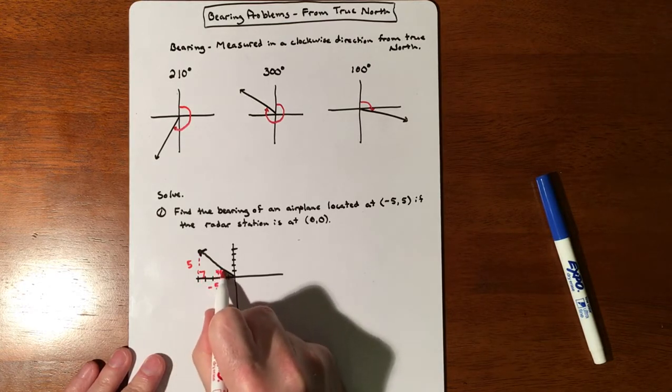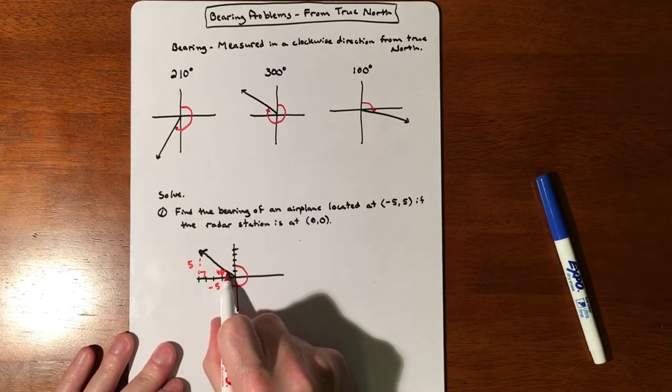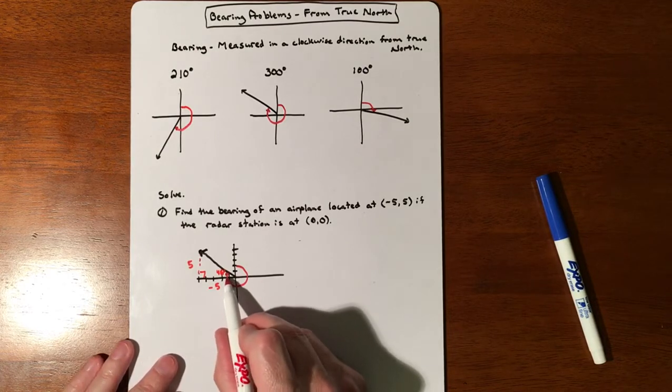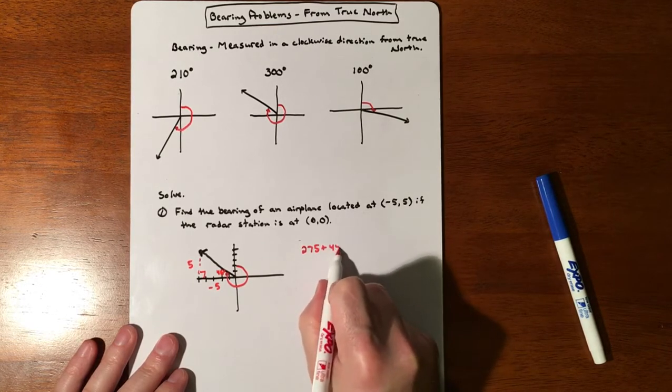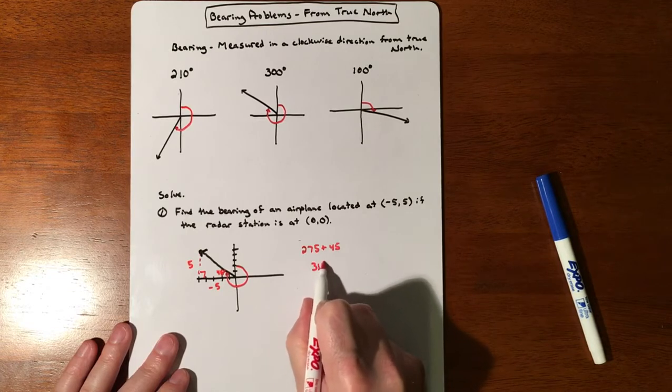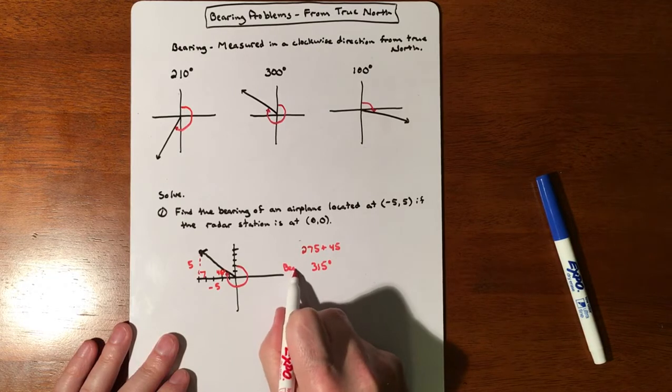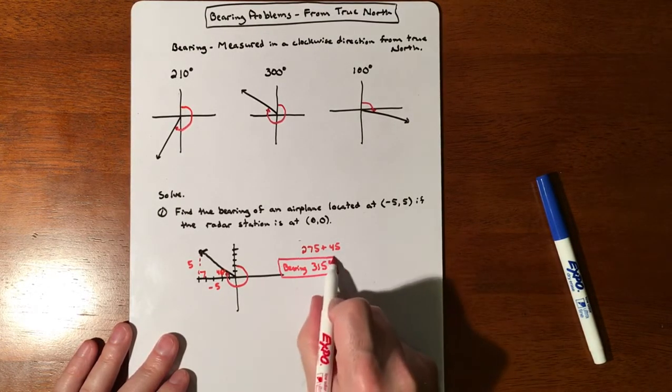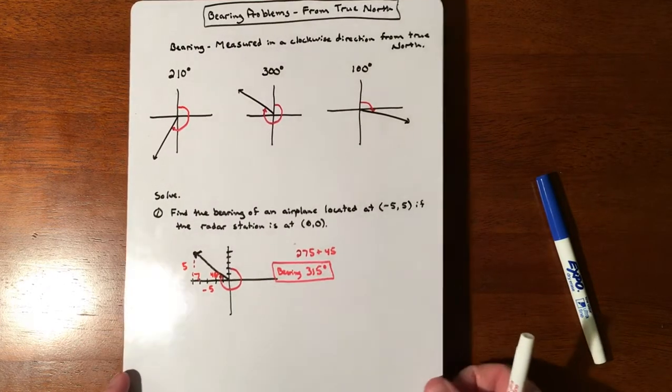If that's 45, then our bearing is going to be 270 degrees plus the 45. So 270 plus 45 puts our bearing at 315 degrees.